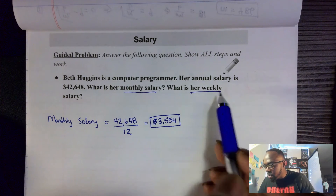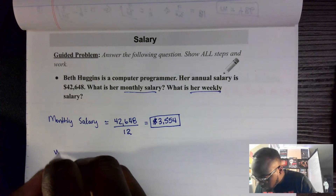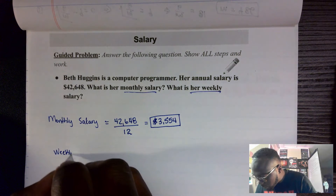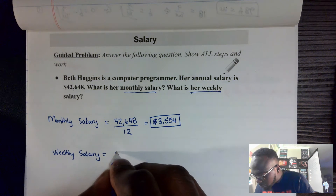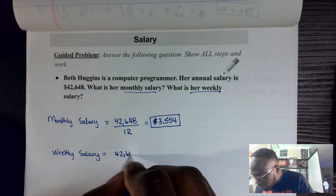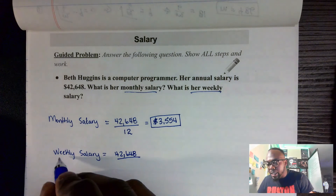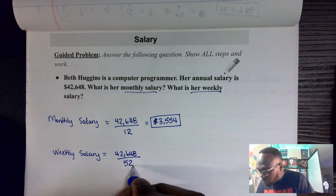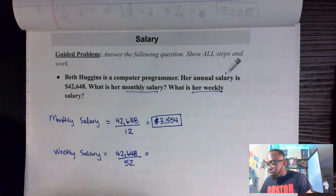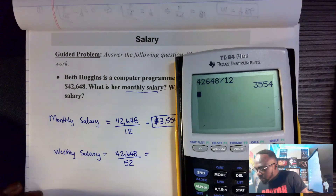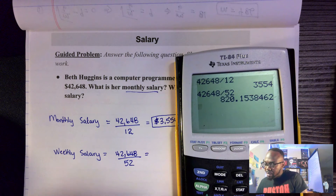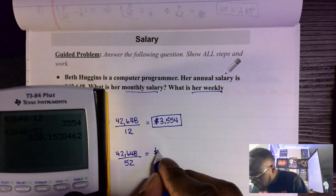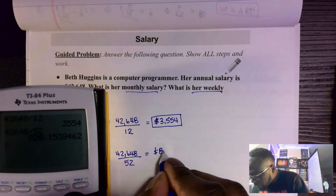Now we need to find her weekly salary. Her weekly salary equals her annual salary of $42,648 divided by 52, because there are 52 weeks in the year. 42,648 ÷ 52 tells us she makes $820.15 weekly.